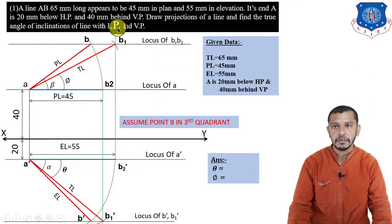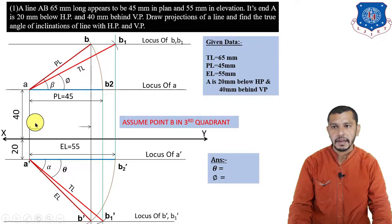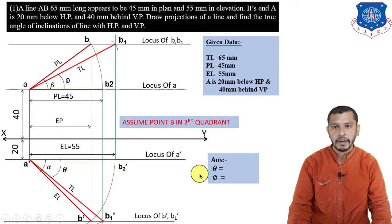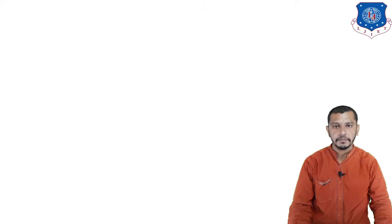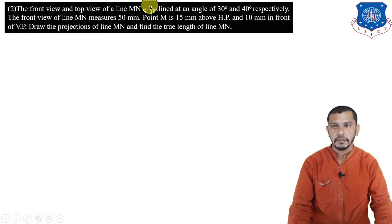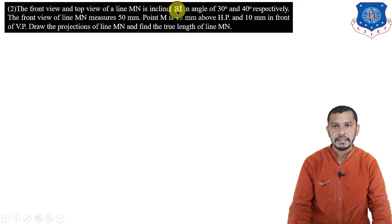Connect B-dash to B to get the end projectors. Now measure theta and phi and write down the answers.